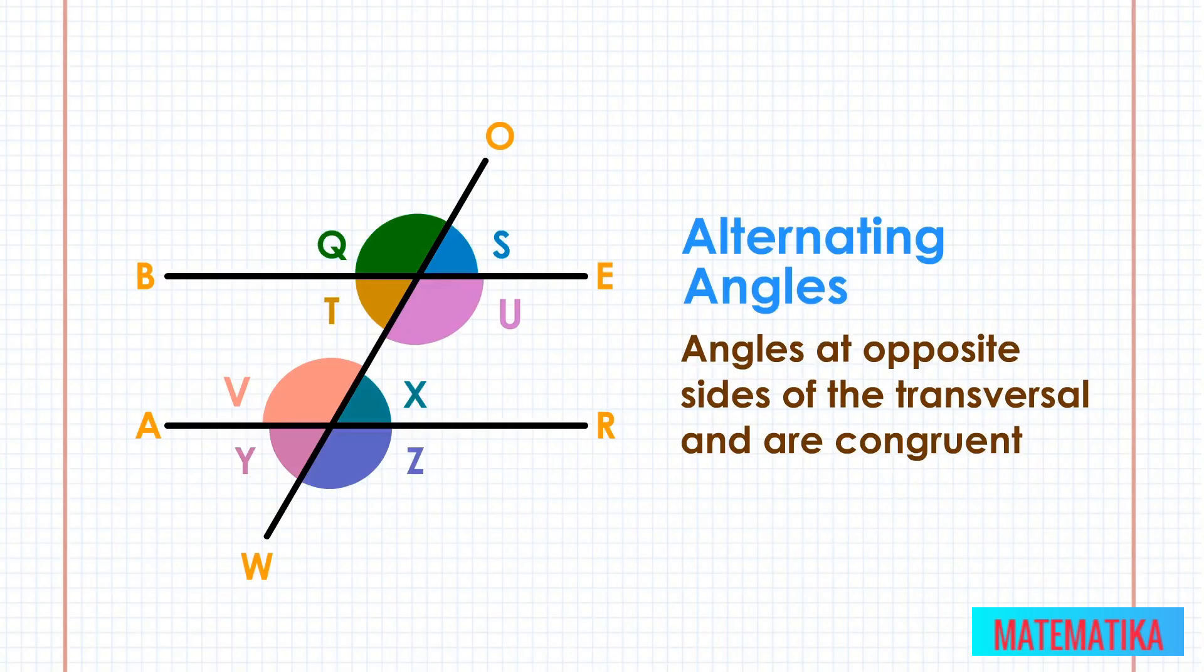The four pairs of alternating angles in our drawing are angle V and angle U, angle X and angle T, angle Q and angle Z, angle Y and angle S.